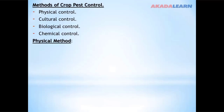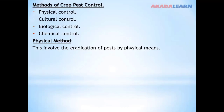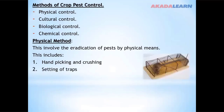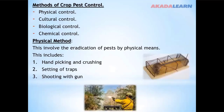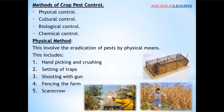Physical method: this involves the eradication of pests by physical means. These include hand picking and crushing, setting of traps, shooting with a gun, fencing of the farm, the use of scarecrows, and the use of mist nets.